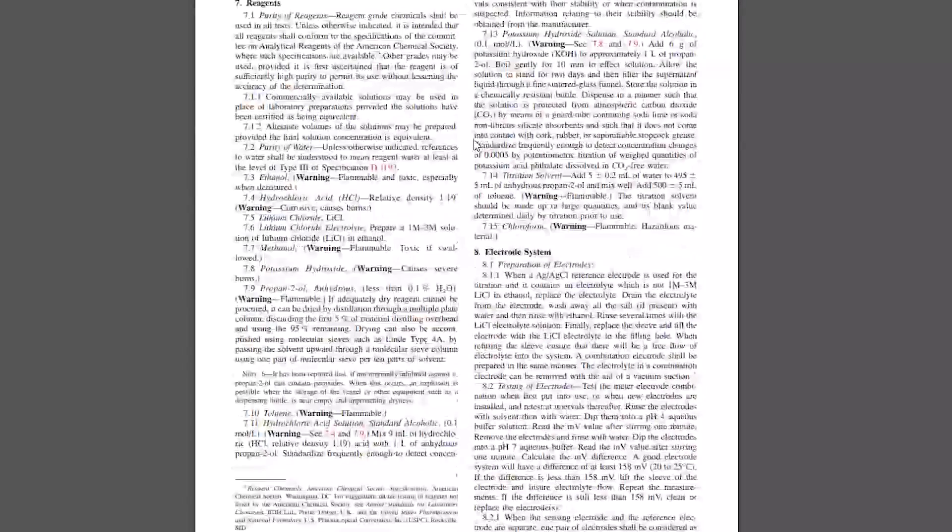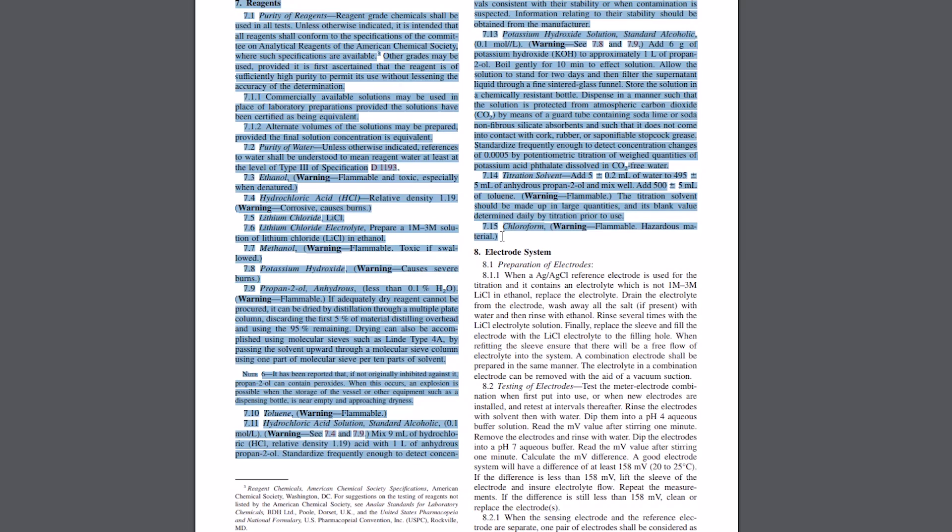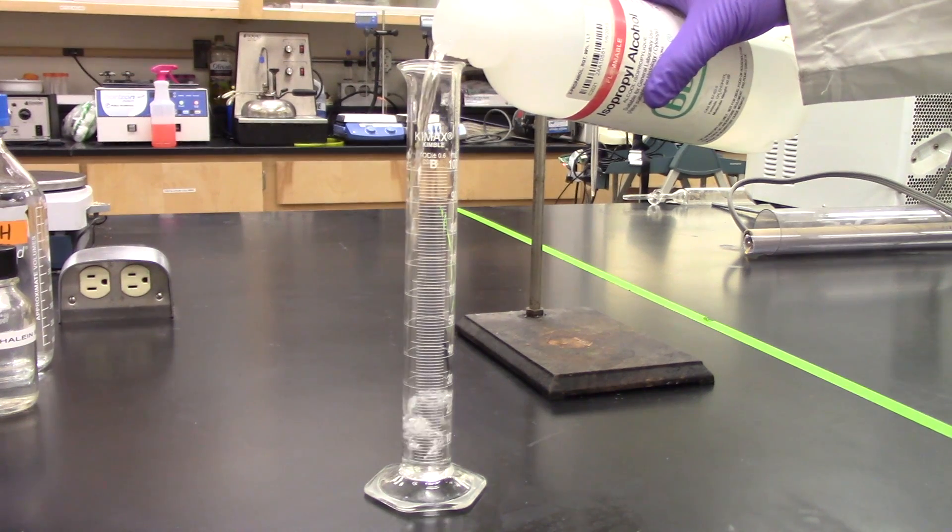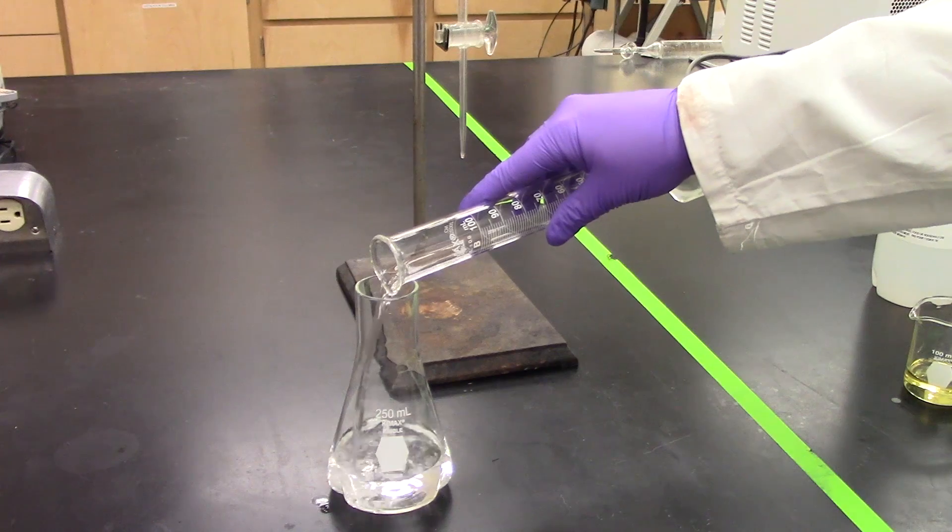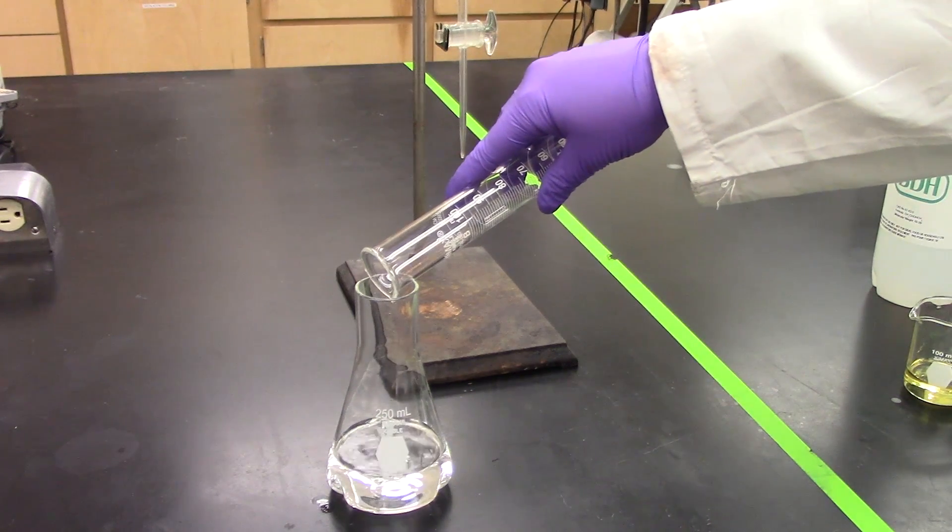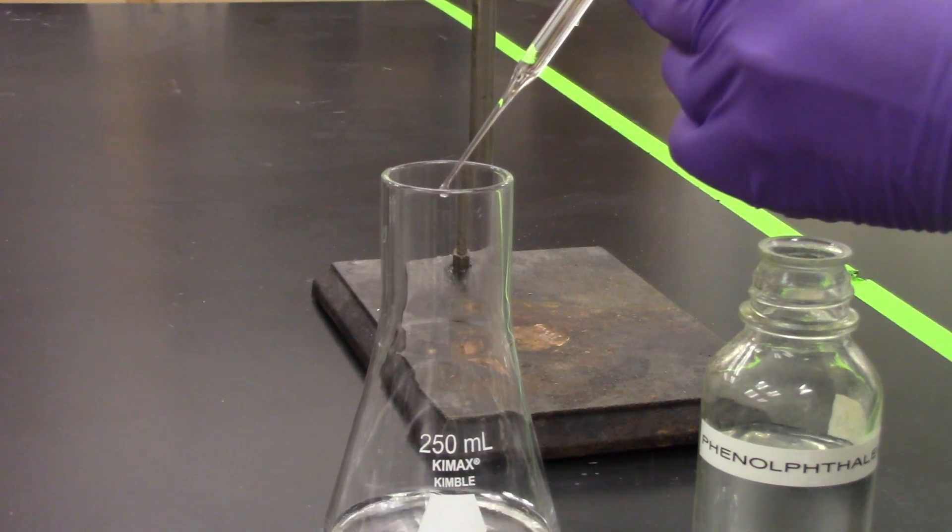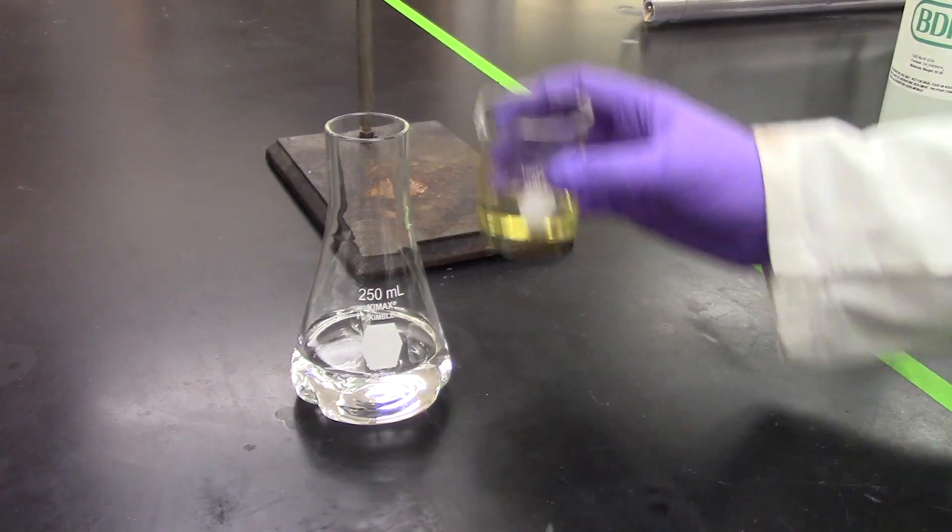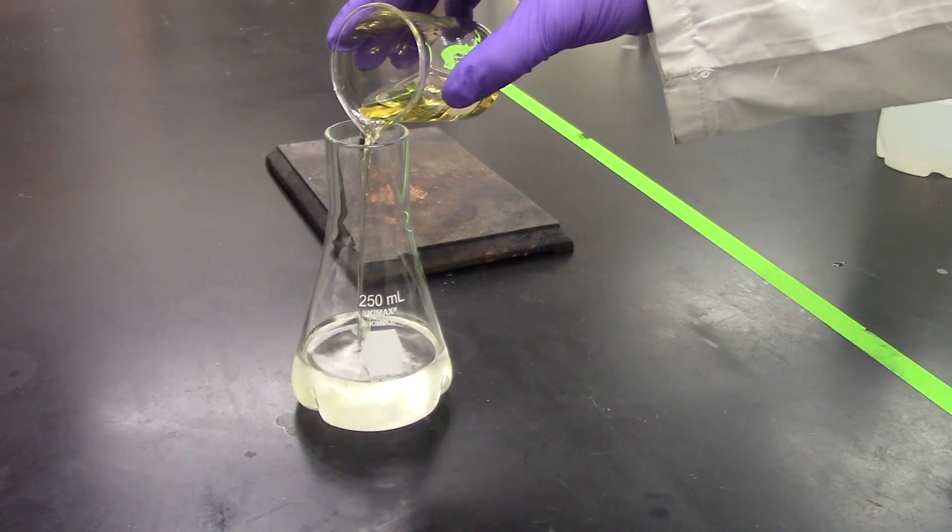Instructions for standardizing the titrant are found in ASTM D664. Start the procedure by adding 100 milliliters of the titration solvent to a 250 milliliter Erlenmeyer flask. Add approximately 10 drops of phenolphthalein indicator solution. Pour a weighed sample of approximately 20 grams into the solvent.